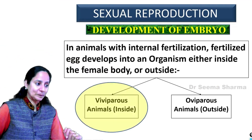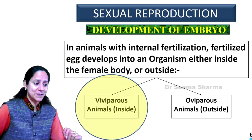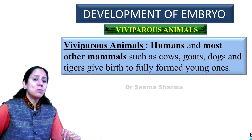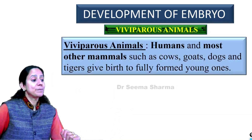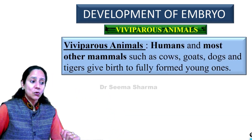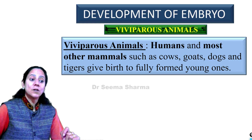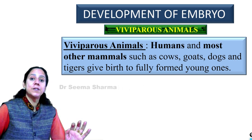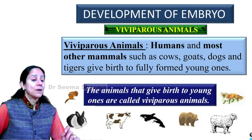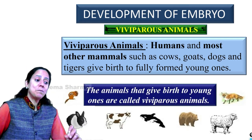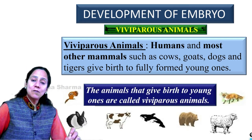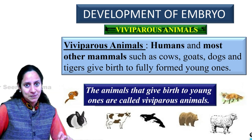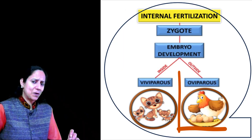So let us take up viviparous animals first. Viviparous animals — human beings and most other mammals such as cow, goats, dogs, and tiger — they give birth to fully formed young ones. So the animals that give birth to young ones are called viviparous animals.